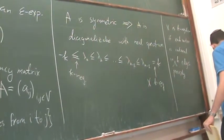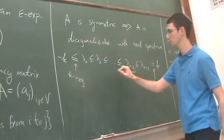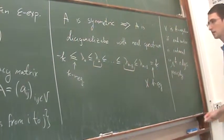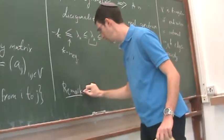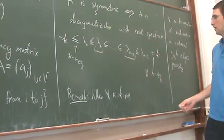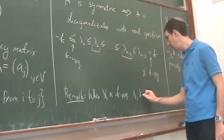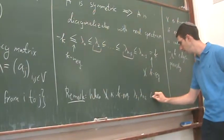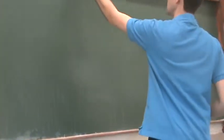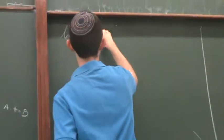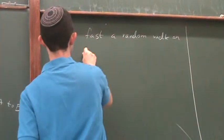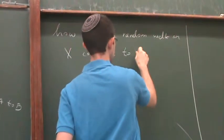Some of you may know that, at least when X is k-regular, λ_1 and λ_{n-2} control how fast a random walk on X converges to the uniform distribution.